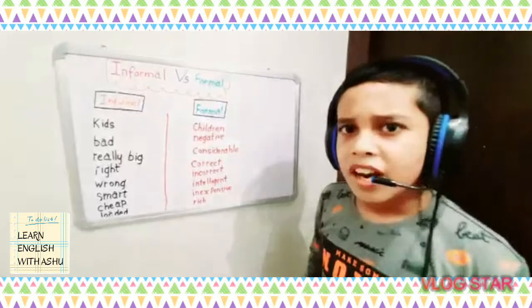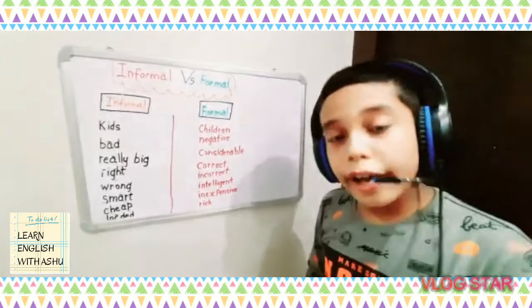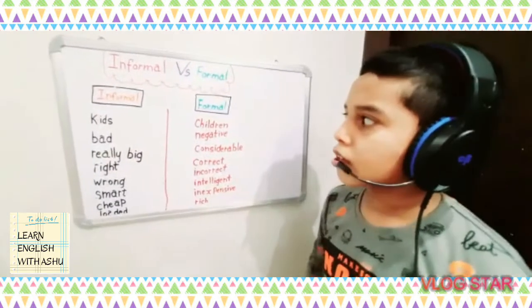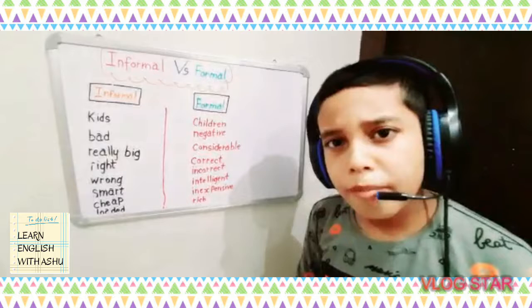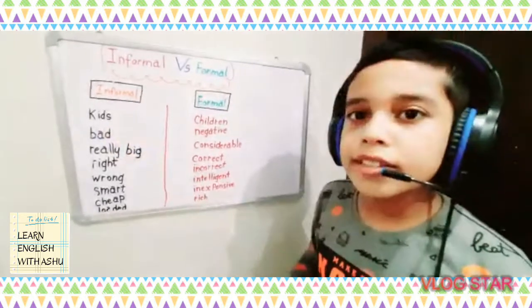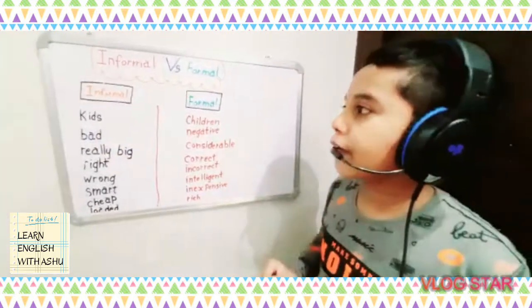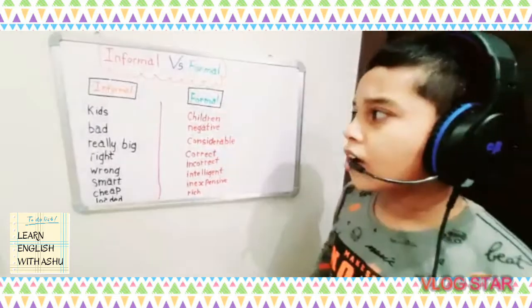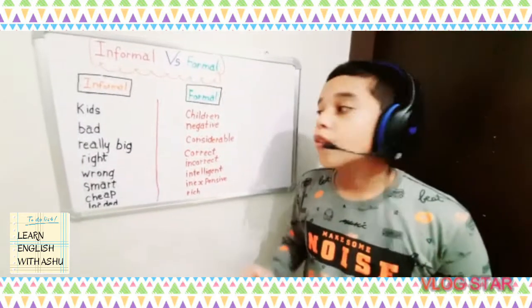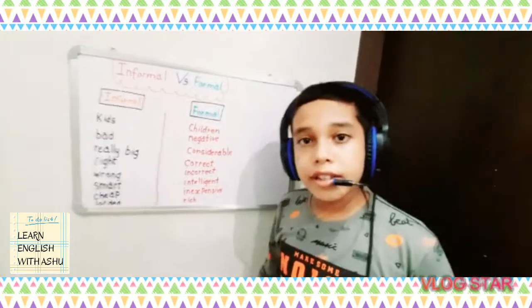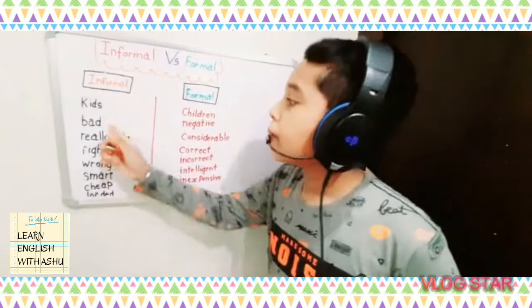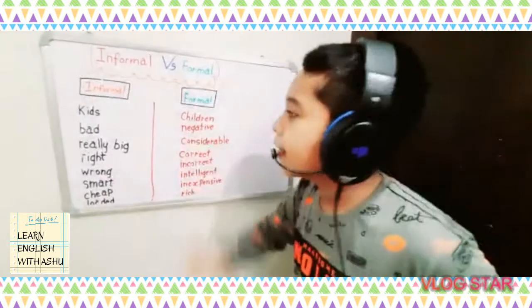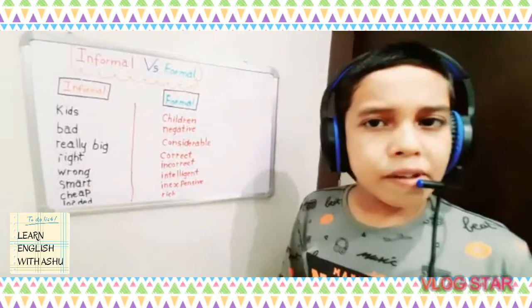Our first informal word is kids. The formal word of kids is children. Our next word is bad. The formal word of bad is negative.